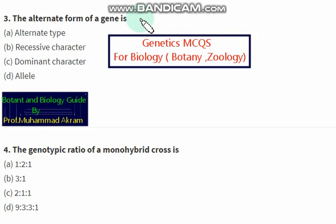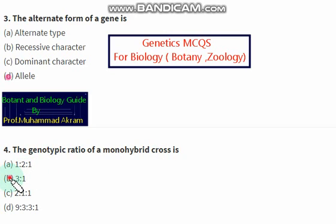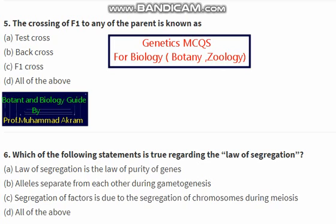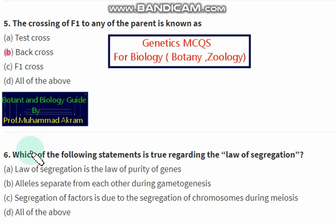The alternate form of a gene is known as — the right option is option D, allele. The genotypic ratio of a monohybrid cross is 3:1. The crossing of F1 to any of the parents is known as back cross.